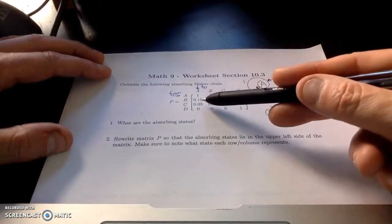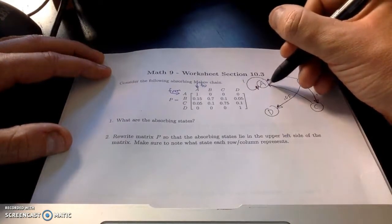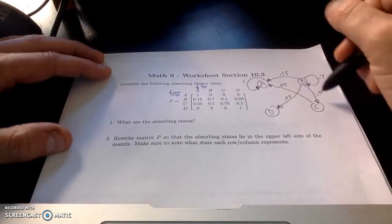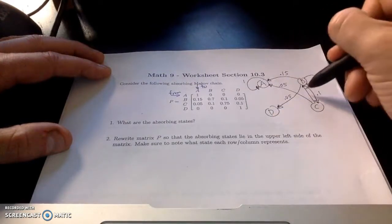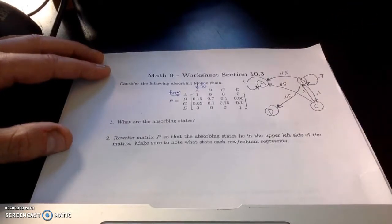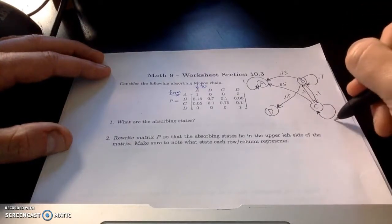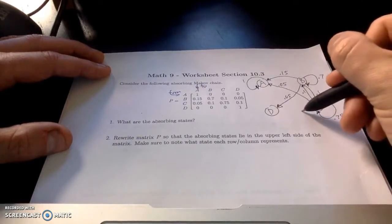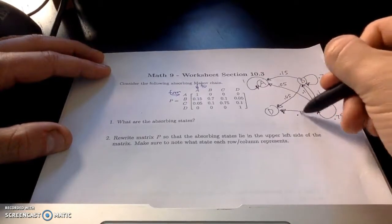Now I'm going to look at the row that involves C. And notice C maps to A at a 5% probability. C maps back to B with a 10% probability. C maps to itself or stays in state C with a 75% probability. And then state C moves to state D with a 10% probability.